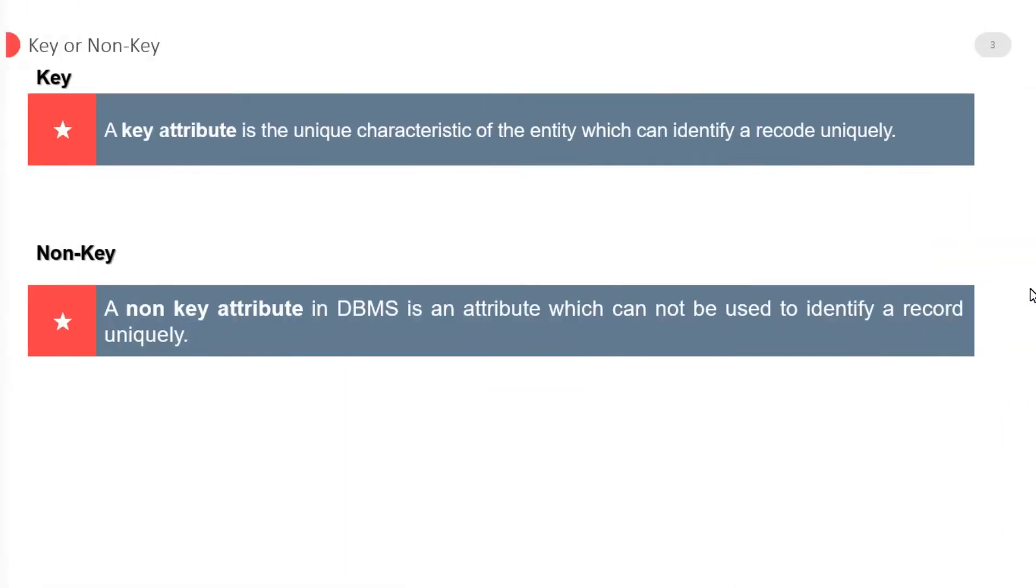First one is key. A key attribute is the unique characteristic of the entity which can identify a record uniquely. They are exceptional. For example, student registration number is an attribute which is unique. A non-key attribute in database management system is an attribute which cannot be used to identify a record uniquely.